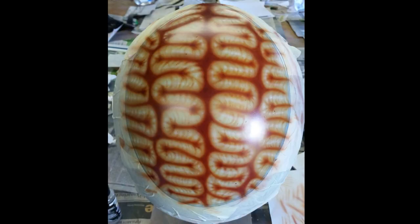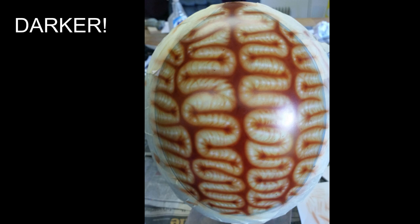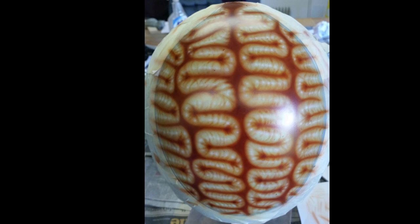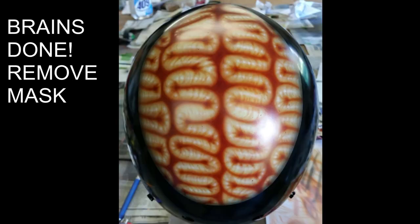But once you think you got it to the intensity that you like, start adding some white highlights. And here again, I'm just using Createx Wicked Detail White. You just want to run your highlights right through the center of or at the top of your brains.